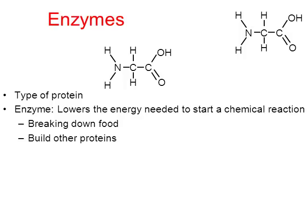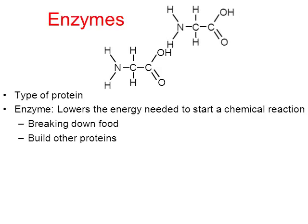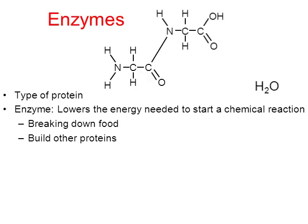Enzymes not only break down food, but they can also build molecules — for instance, they can build proteins. Here we have two amino acids. How do they stick together to form a larger polypeptide? Through a chemical reaction called dehydration synthesis — these two amino acids bond together and water is removed, which is why it's called a dehydration synthesis reaction. Enzymes help break the original bonds in order to build up this larger protein.